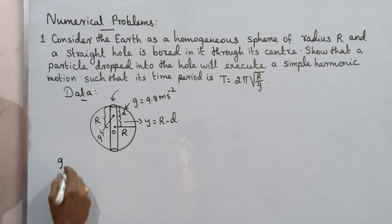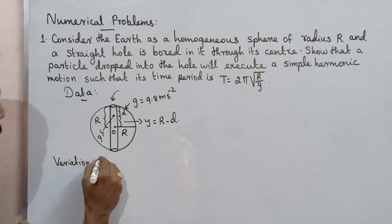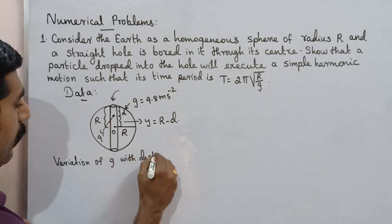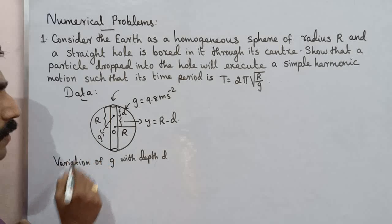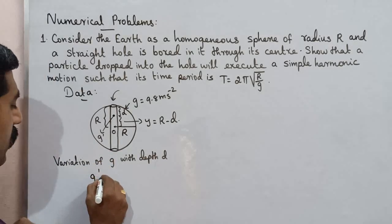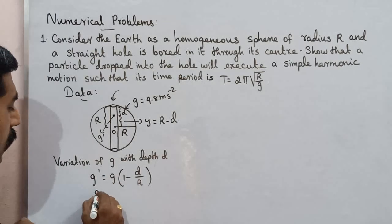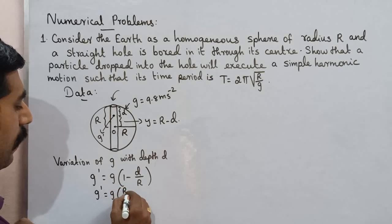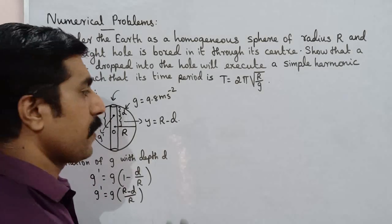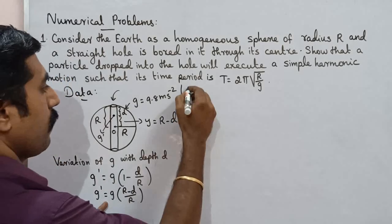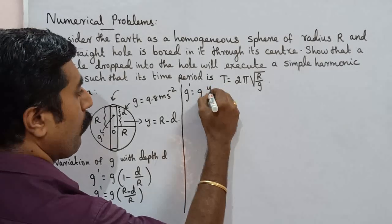So here we prove it. Variation of G with depth D: G prime, the acceleration due to gravity at depth D, is given by the formula G' is equal to G into 1 minus D by R. So G' is equal to G into R minus D by R. And R minus D equals y, so G' equals G times y by R.